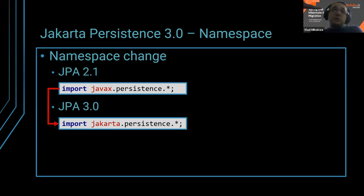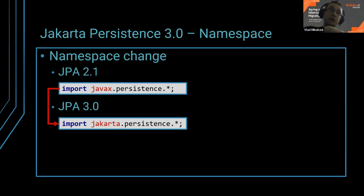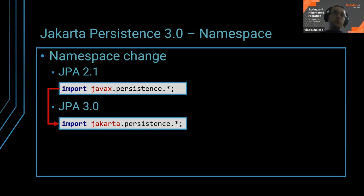There are also indirect changes you will have to make. You need to ensure that all other dependencies — not only Spring — that used to use javax.persistence now need to use jakarta.persistence. For example, transaction managers or frameworks like Blaze Persistence. Any plugin that adds something to JPA or Hibernate would have to be upgraded as well. That's an indirect change that might make this migration much more complex.